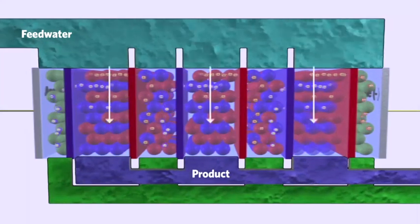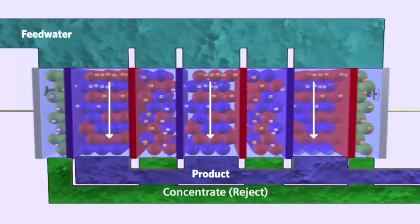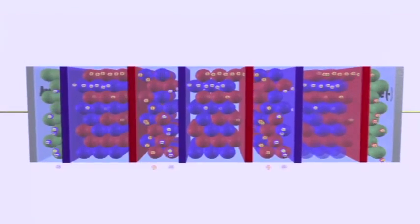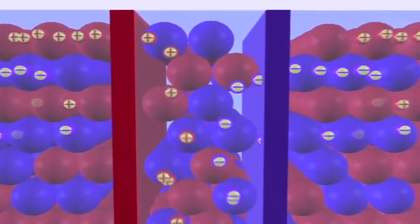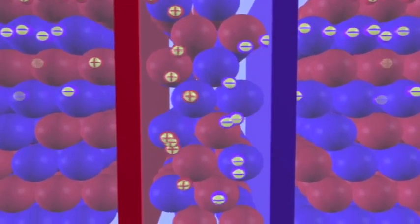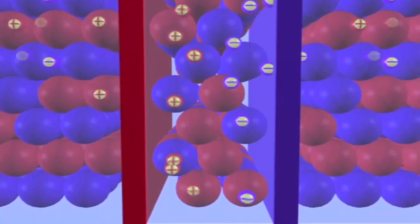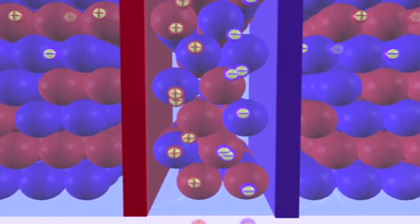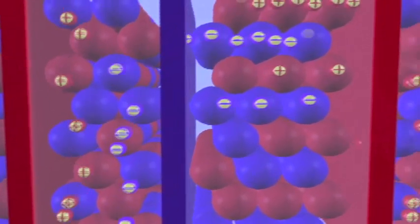These water streams remain separated throughout the process because only ions can pass through the membranes. Ions migrate and accumulate in the concentrating compartments, where they are washed away into the reject stream. The water leaving this compartment contains a concentration of ions approximately 10 to 20 times higher than the original feed water. This water may be drained, recycled, or reclaimed for further treatment.